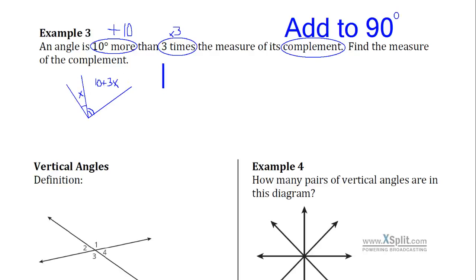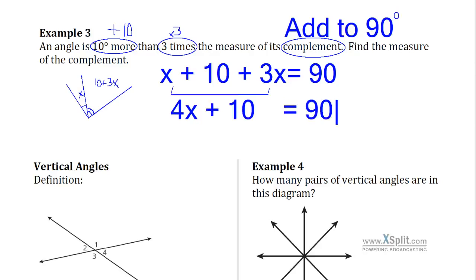We could write this as an equation. Since they add to 90 degrees, the x angle plus the 10 plus 3x angle all adds up to 90 degrees together. From here we could combine some like terms and we could say 4x plus 10 is equal to 90. I could go ahead and subtract 10 from either side. And we could say 4x is equal to 80. And then dividing both sides by 4, we'd end up with an x equals 20.